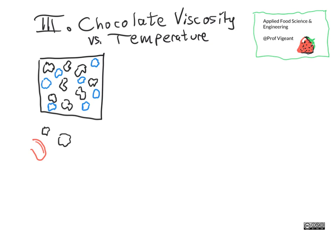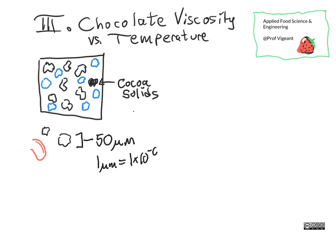To think about chocolate and viscosity, we first have to think about what chocolate is. Chocolate always has a minimum of three things, and often four. We have the cocoa solids, and an important thing about them is their shape and size. We have to be careful because if they are too large — bigger than 50 microns, where one micron equals 1×10⁻⁶ meters — they taste like grit in our mouths. So we want cocoa solids to be smaller than 50 microns so that the chocolate can be smooth and creamy.